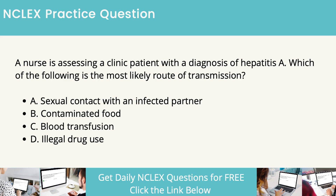A nurse is assessing a clinic patient with a diagnosis of hepatitis A. Which of the following is the most likely route of transmission? Sexual contact with an infected partner. Contaminated food. Blood transfusion. Illegal drug use.